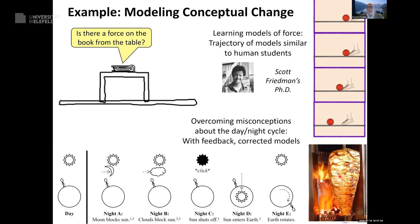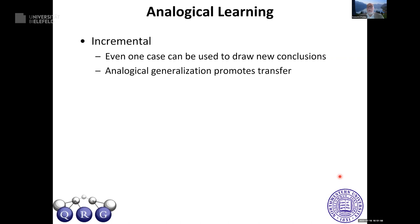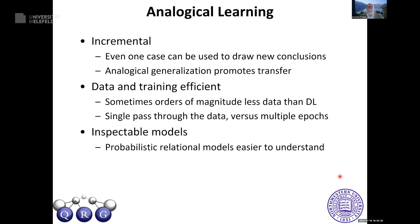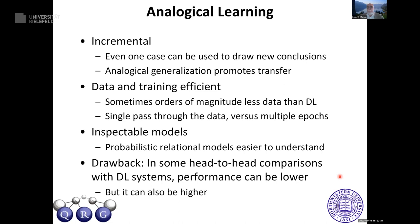To summarize analogical learning more broadly: analogy is incremental — even one case can be used to draw new conclusions, and analogical generalization by removing irrelevant things helps promote transfer. It's data- and training-efficient — sometimes orders of magnitude less data than deep learning, and usually a single pass through the data versus multiple epochs. The models are inspectable: probabilistic relational models are much easier to understand than tensors or vectors or matrices. Sometimes in head-to-head comparisons with deep learning our performance can be lower, but sometimes it's actually higher — it varies.